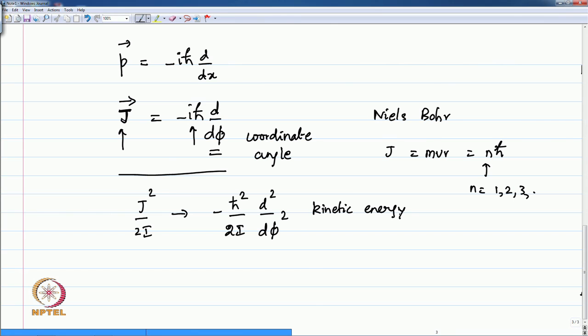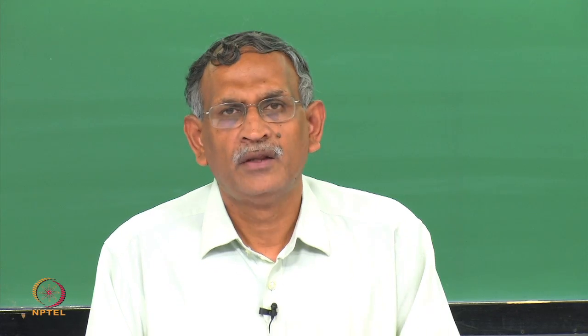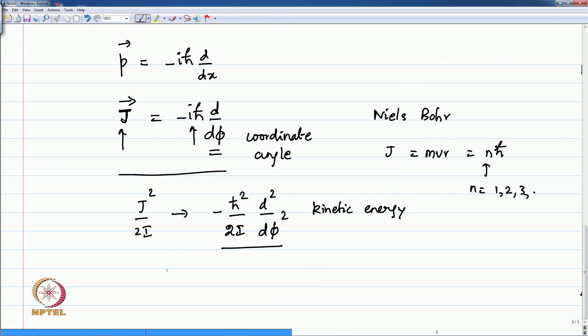We shall assume that the particle is moving or fixed in a circle of radius r, and r does not change. If r is fixed then the potential energy due to that radius is a constant and we can ignore it in this simple exercise. We shall only worry about the kinetic energy operator. Therefore, when you solve H psi equals E psi, the psi is now a function of the angle phi.